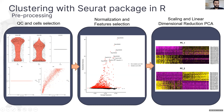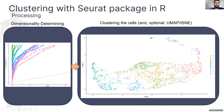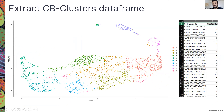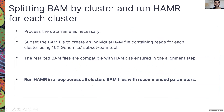We proceed with the standard SEURAT clustering pipeline, which includes quality control and cell selection, normalization, feature selection, scaling, and linear dimensionality reduction with PCA. Then we determine the optimal number of dimensions and cluster the cells. The key output we need is a data frame of each cell barcode and its corresponding cluster ID. We use this to subset the BAM file for each individual cluster, producing a BAM file per cluster that we run through HAMR to identify modifications for each cluster separately.